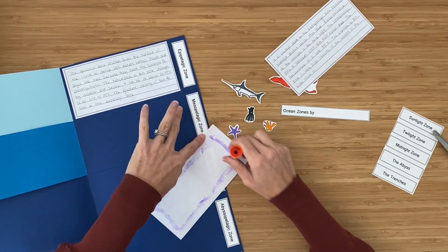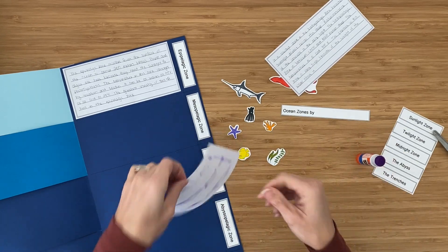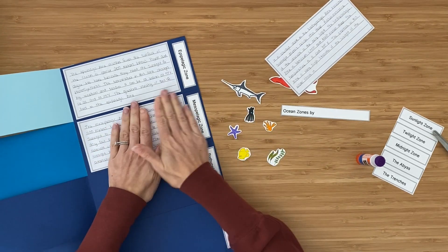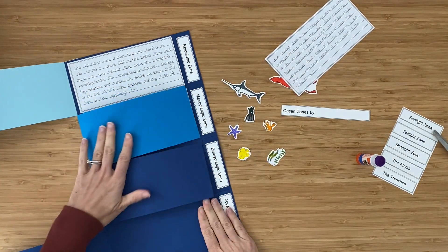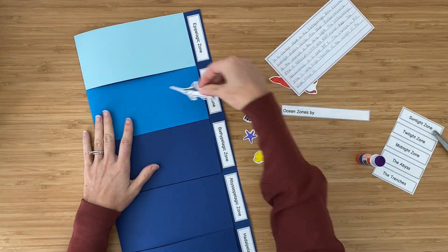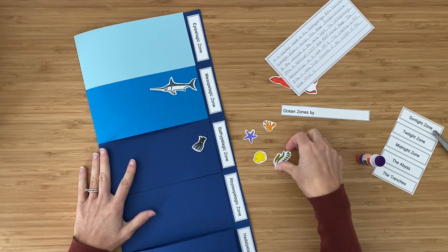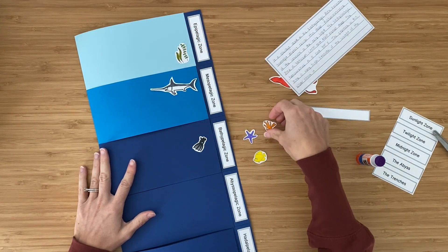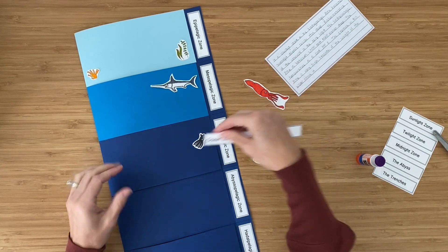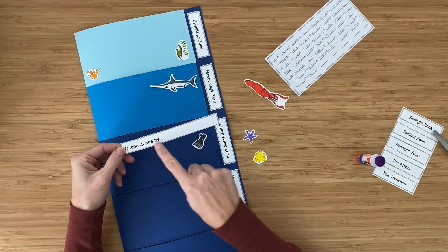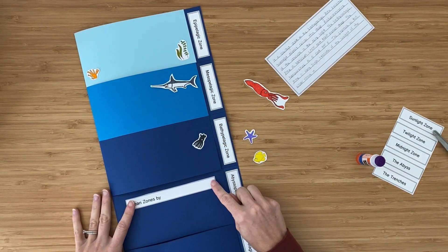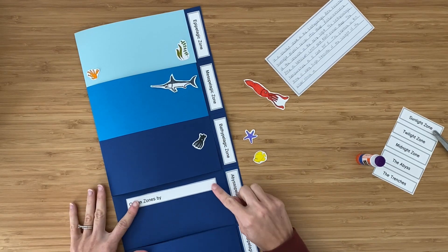Then of course you're going to color all of the sea life and cut them out as well, and start placing them in the appropriate zones. I would suggest kind of putting them all on there first, make sure there's space for everything you want before you start gluing things down. Then your title label 'Ocean Zones by' with your name right here. I would put it in the abyss—there's not a whole lot that lives there so it won't be in the way of any of your animals.